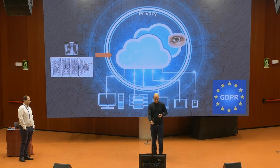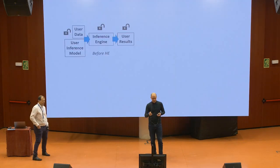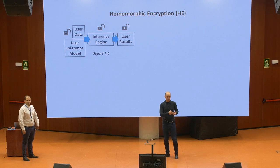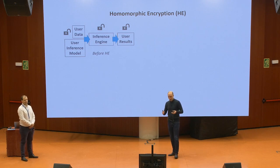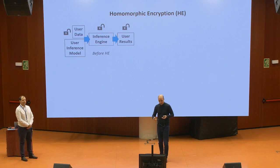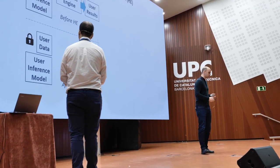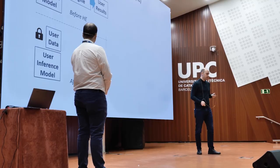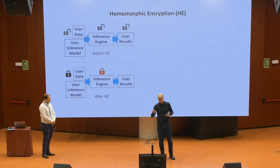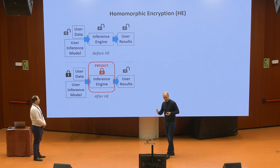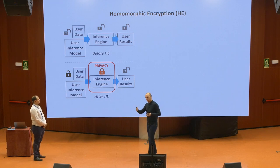Therefore, I want to introduce a technique called homomorphic encryption. Before homomorphic encryption, your data, your models, and the inference computation were all unprotected, and still you could get predictions. But a much better approach is protecting your user data, your models, and your inference process, obtaining your results and decrypting them with your private key. So we compute over encrypted data and obtain results without having to reveal to the untrusted cloud all our sensitive information.